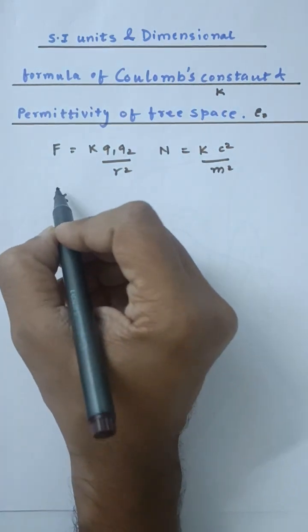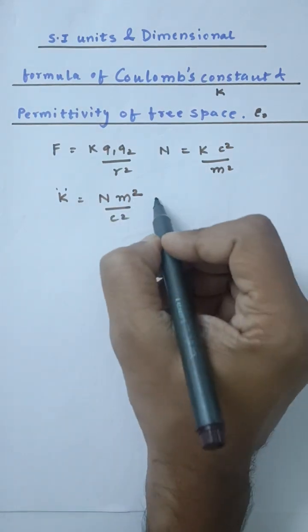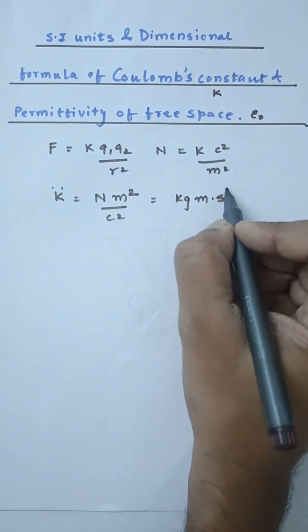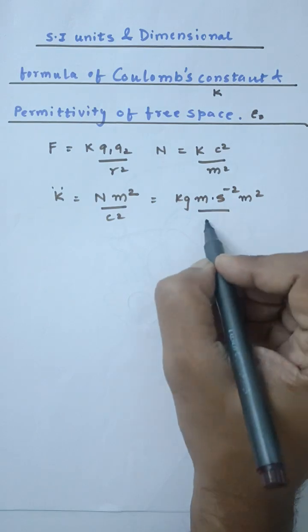So the SI unit of the dielectric constant is Newton·meter² upon Coulomb². This can be further written as kg·m/s² for Newton, then meter², this meter² upon Coulomb².